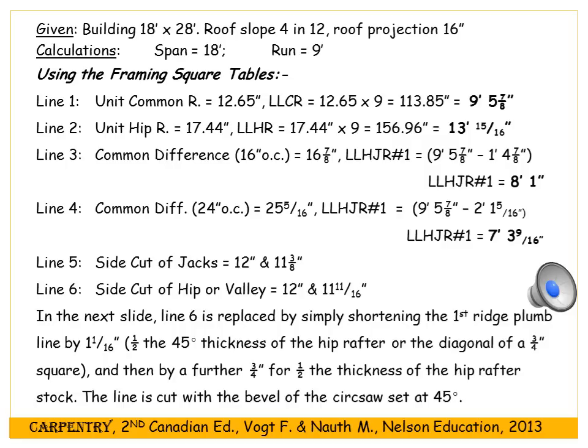For an 18 by 28 foot building with a 4-12 slope: the width is 18 feet giving a run of 9 feet. The unit common rafter is 12.65 inches, so the line length of the common rafter is 12.65 × 9 = 113.85 inches, or 9 feet 5 and 7 eighths inches. For the hip rafter, use line 2: 17.44 × 9 = 156.96 inches, which is 13 feet and 15 sixteenths of an inch.